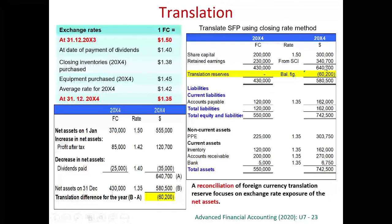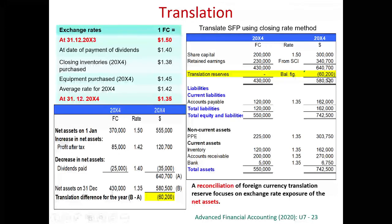You can see that 640,700 cannot balance the balance sheet, so this is a balancing figure — we insert one item here. The reason the balance sheet cannot balance is that we use different exchange rates to translate different items. Therefore there is an exchange difference. Under the closing rate method, any exchange difference goes to translation reserve. We insert a debit translation reserve of $60,200 as the balancing figure. If the question does not ask otherwise, you can simply insert this debit translation reserve as the balancing figure.